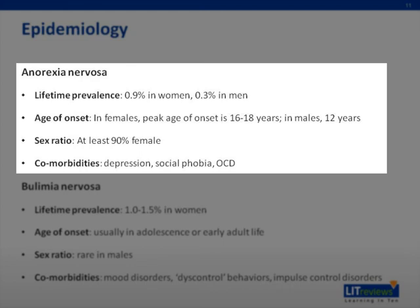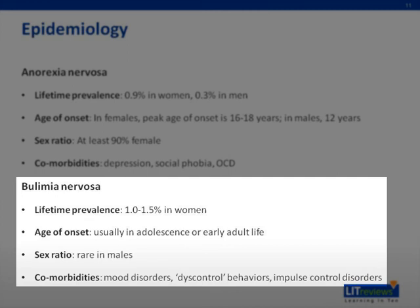Bulimia nervosa has a lifetime prevalence of 1% to 1.5% in women, and the age of onset is usually in adolescence or early adult life. BN is rare in males. A diagnosis of BN may be accompanied by a host of comorbidities, including anxiety or other mood disorders and multiple discontrol behaviors.